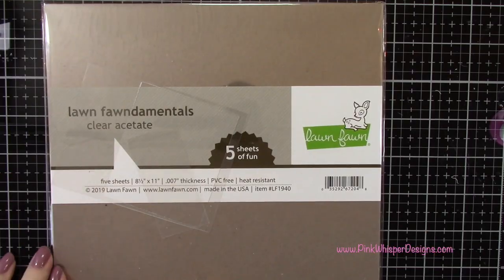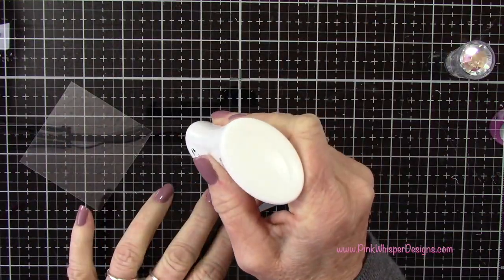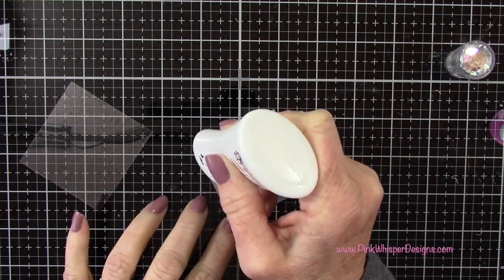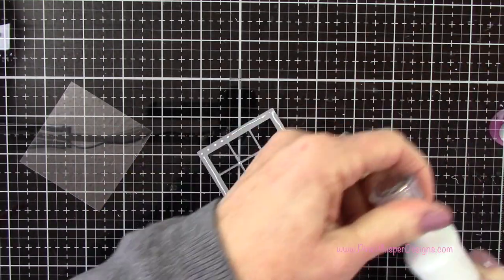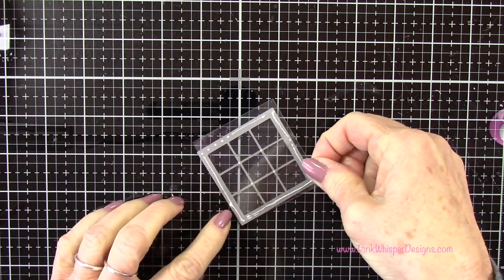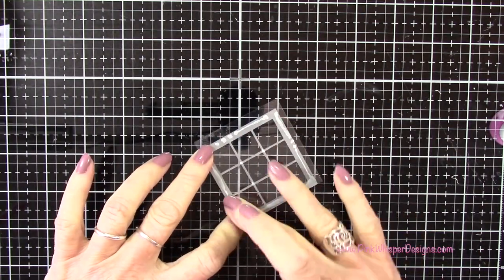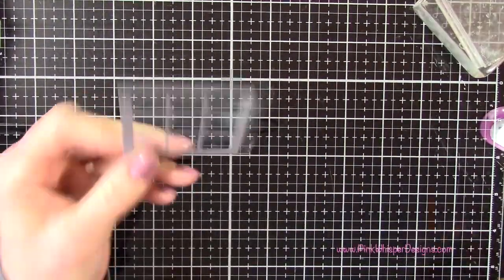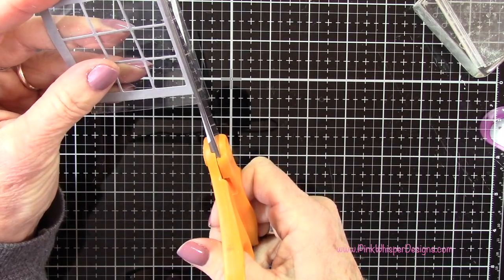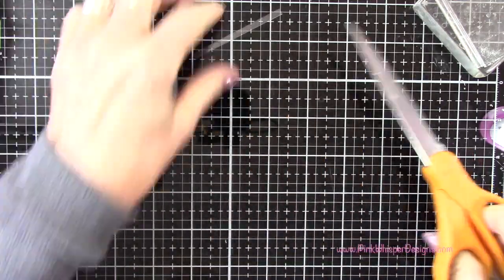Now I'm using some clear acetate. This is from Lawn Fawn and I'm just going to go ahead and put that acetate behind this window. I'm using my Nouveau Deluxe adhesive and I'm just going to glue these two together. I'll let that sit and dry. I'm just placing a couple acrylic blocks on there. Once that's dry I'm just going to cut away any excess.